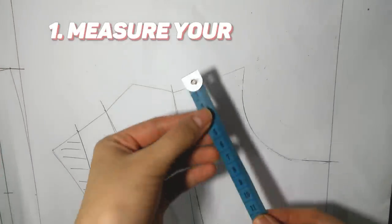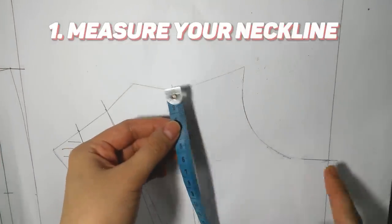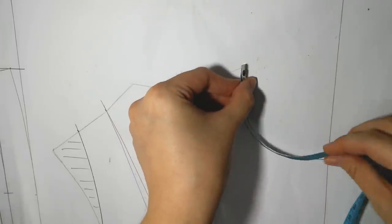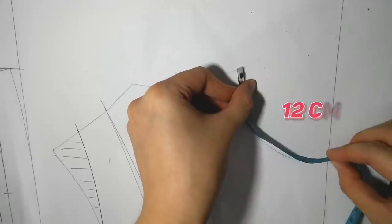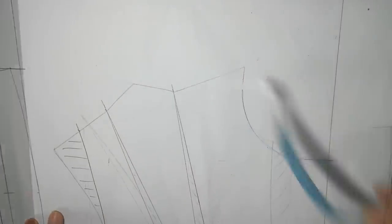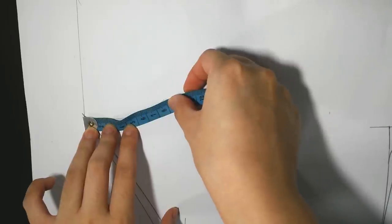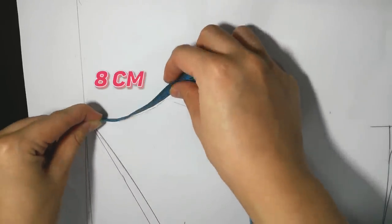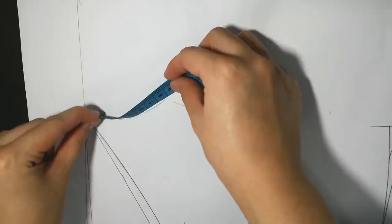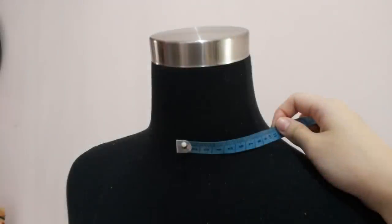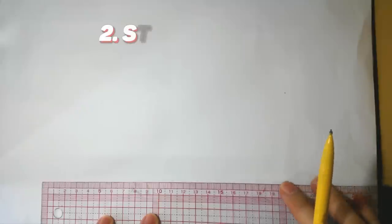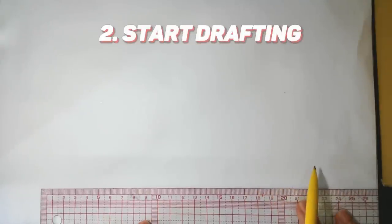Hi guys! To begin making a mandarin collar, first we need to measure the neckline. Half of my front neckline is 12cm. Don't forget to measure the back neckline too - mine is 8cm. If you don't have a pattern, you can also measure directly half of the neck. Done with measuring, now we can start drafting.